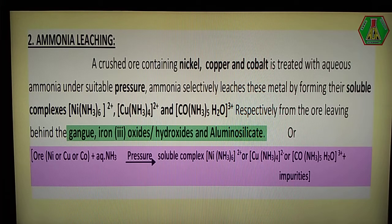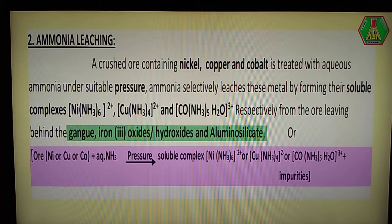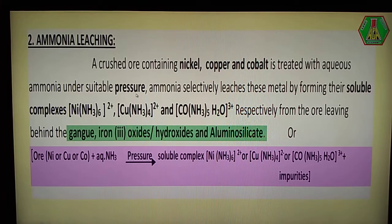In this ammonia leaching process, it is applicable for nickel, copper, and cobalt metallic ores. Initially, the nickel, copper, and cobalt metallic ores are crushed and treated with aqueous ammonia under suitable pressure. Aqueous ammonia means ammonium hydroxide — ammonia gas which is soluble in water. This aqueous ammonia is mixed with nickel ore or copper ore at suitable pressure. Ammonia selectively leaches these metals.